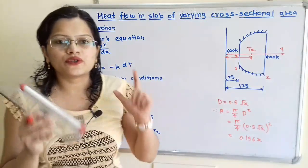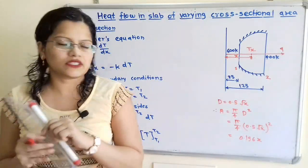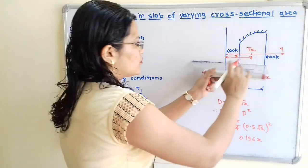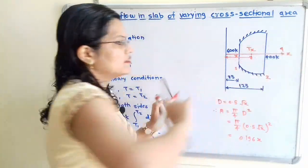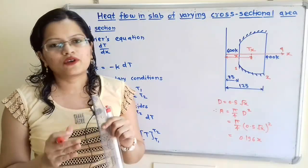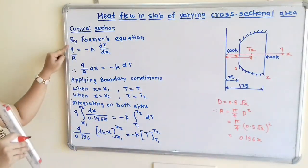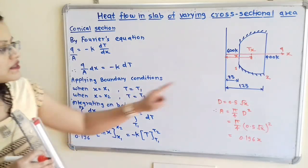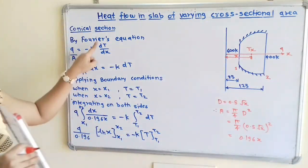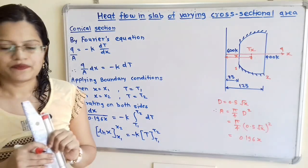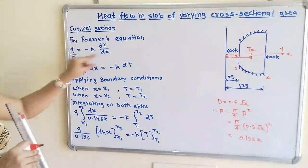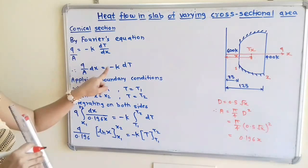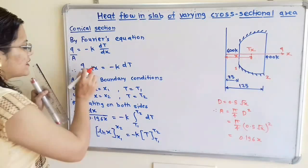The unidirectional steady state conduction process is taking place and heat is flowing along the direction of X. We apply Fourier's equation: Q/A = −K dT/dX. There are two variables: distance X and temperature T, so dT/dX represents these variables. Rearranging, we transfer dX to the left-hand side, giving Q/A · dX = −K · dT, where A is the cross-sectional area.